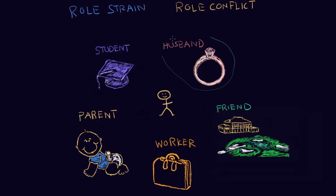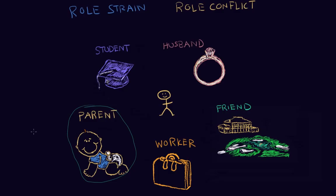In another scenario, let's say a week later he has a paper to do for school, but he finds out that his son was injured and may need to go to the hospital. In this case, his status as a parent may take precedence over his status as a student because he's concerned for his child's health.